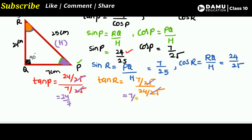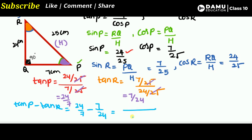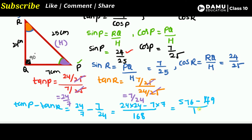So tan P minus tan R equals 24 by 7 minus 7 by 24. Taking LCM of 168: we get 576 minus 49 divided by 168, which gives 527 divided by 168. This is the value of tan P minus tan R. Thanks for watching, please subscribe.